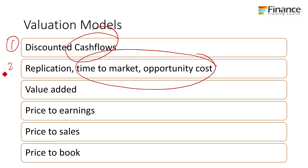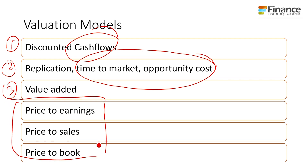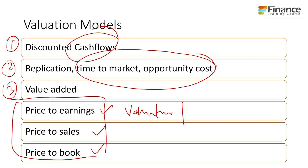Second is replication. Third is how much value do you add? And then you've got the multiples approaches — price to earnings, price to sales, price to book — the valuation multiples we used earlier to value the insurance industry.